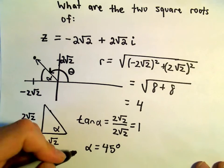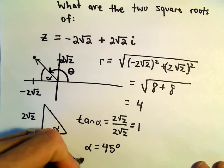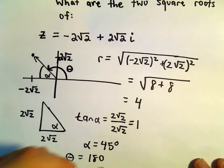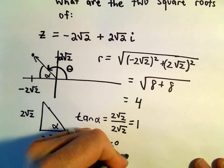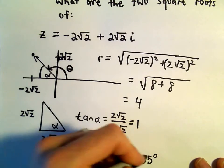Well, that means theta would be 180 minus 45 degrees, which would give us 135 degrees.